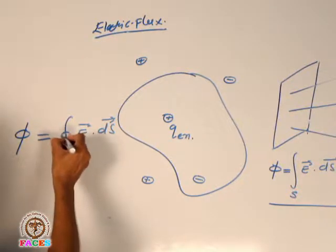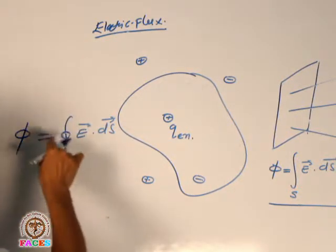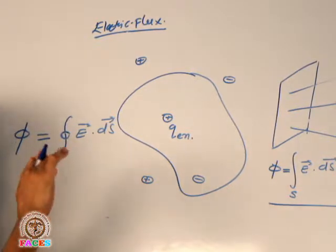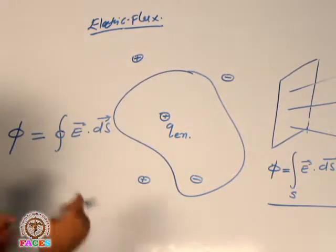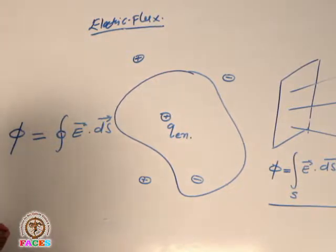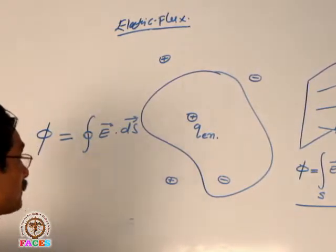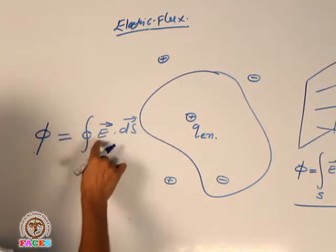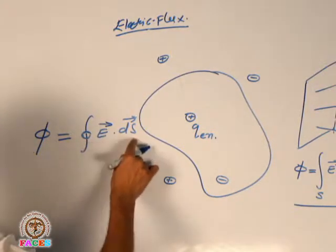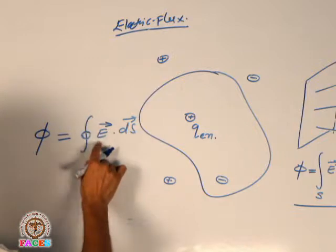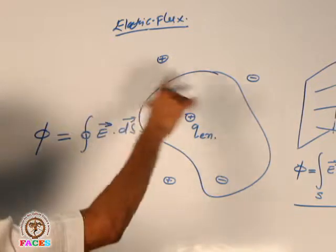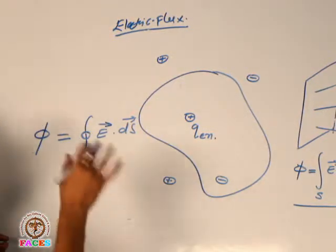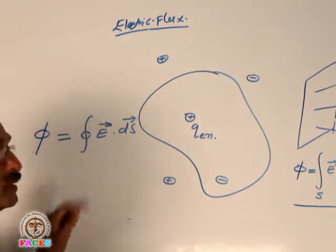This integral sign has a circle, which means integration over the entire closed surface. So total flux φ equals the surface integral of the electric field — the electric flux integrated over the entire closed surface. Mathematically calculating this directly is very difficult.